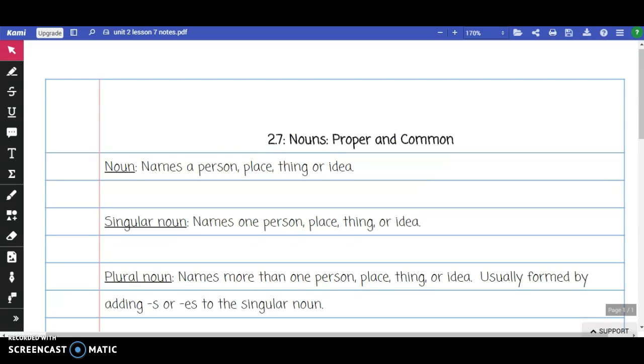The first thing that you're going to record is the definition of noun. A noun names a person, place, thing, or idea.